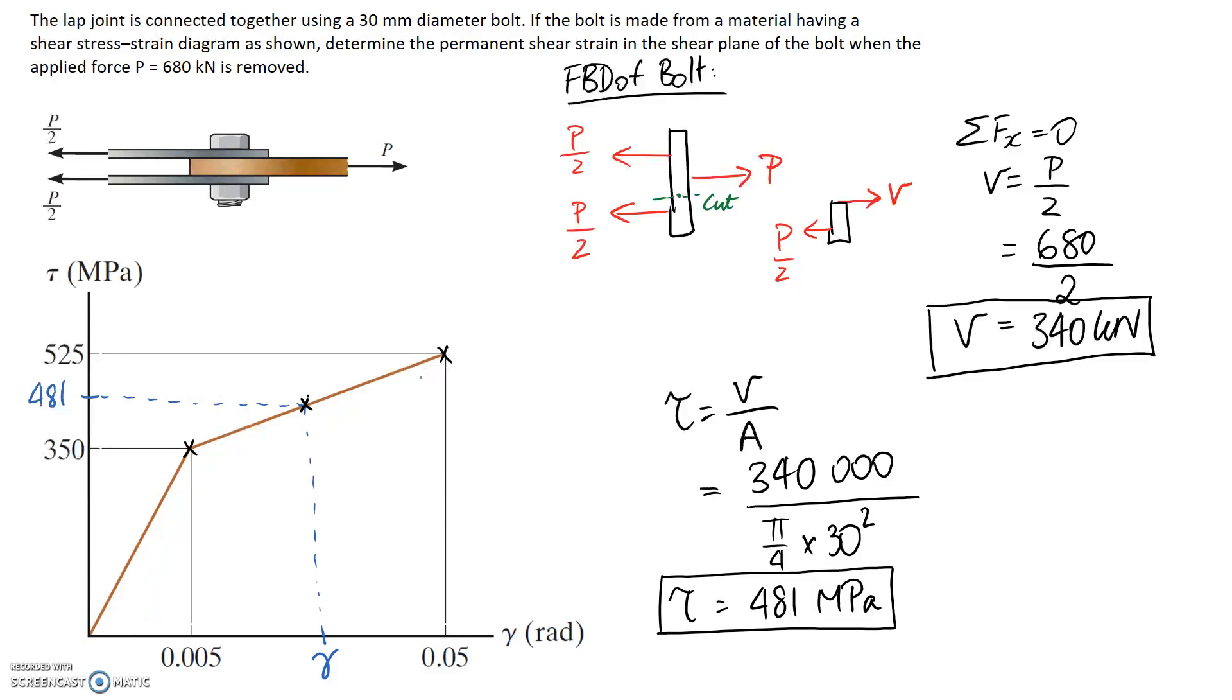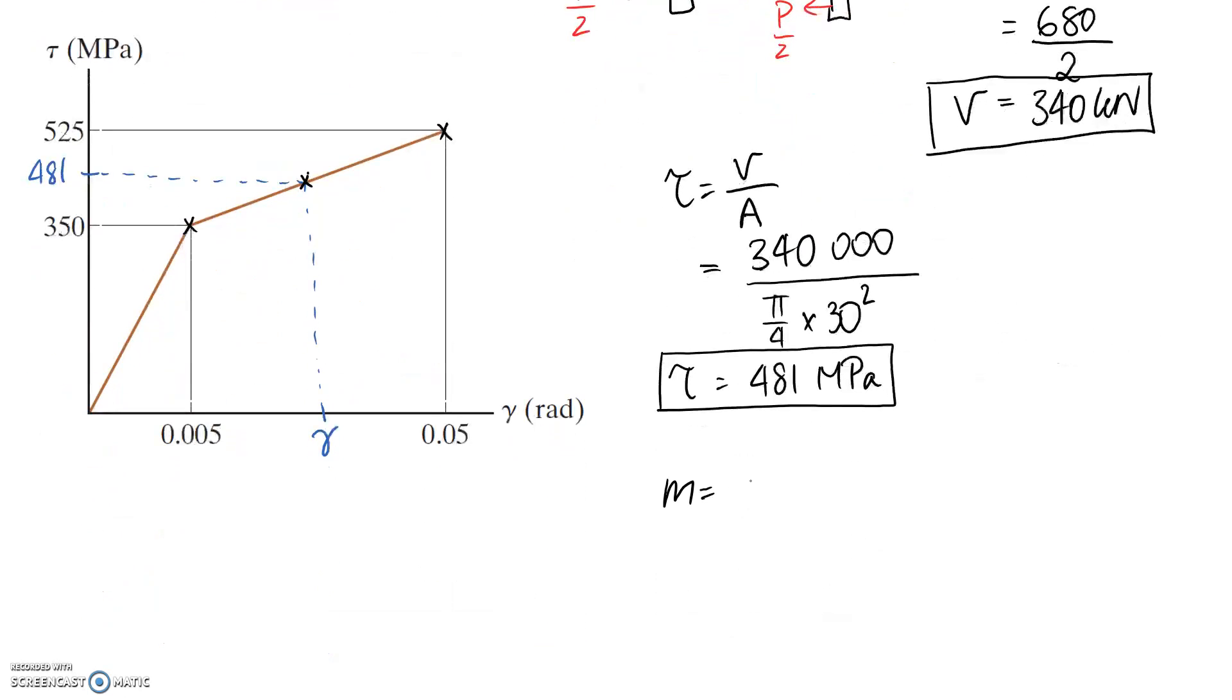So I'm going to start by working out the gradient of this line, let's call it M. So we know it's going to be equal to rise over run, so the rise in here between these two points is 525 take 350 divided by the run, which is the difference between these two, and this works out to be 3889.